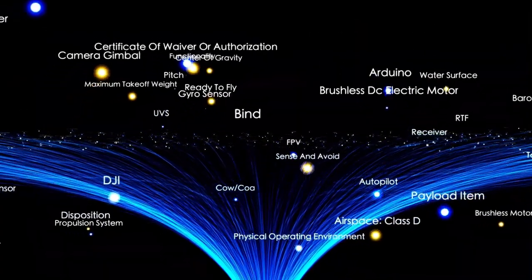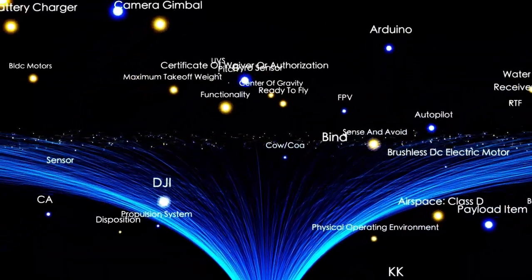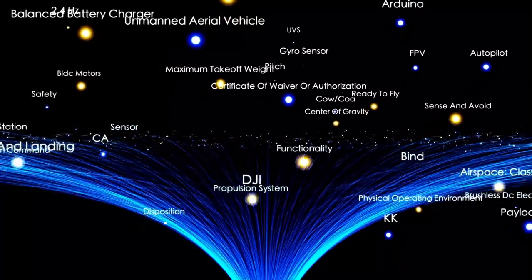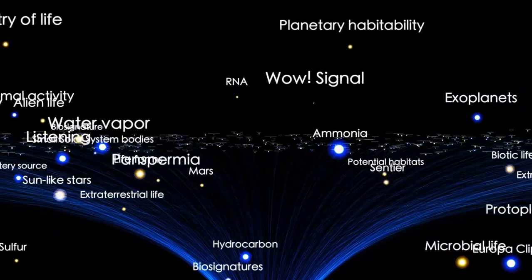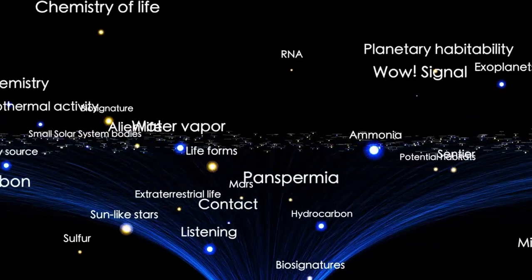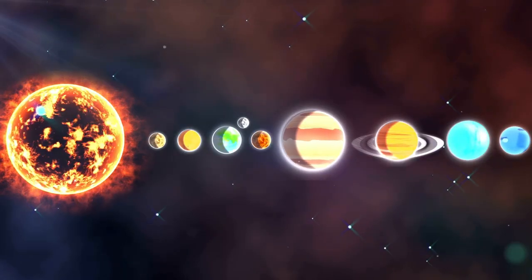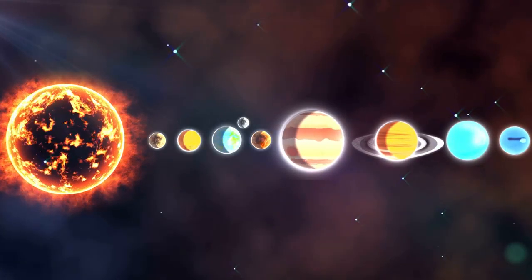Proxima Centauri b receives just about the same amount of energy from its star as our Earth does from the Sun. Could this mean that there's water on its surface, perhaps even life? As we venture beyond our own solar system, we discover a whole new world of exoplanets, planets that orbit stars other than the Sun.